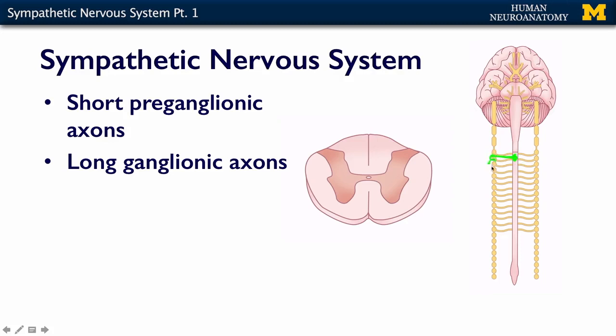So the ganglionic axon that's going out to the target could distribute anywhere from maybe even a meter, because it could be in the chain up here and then go all the way down your leg.